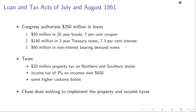They impose $20 million in property taxes — interestingly on both Northern and Southern states, as they don't recognize that the South has seceded, so the South is still on the hook in theory to pay its property taxes.